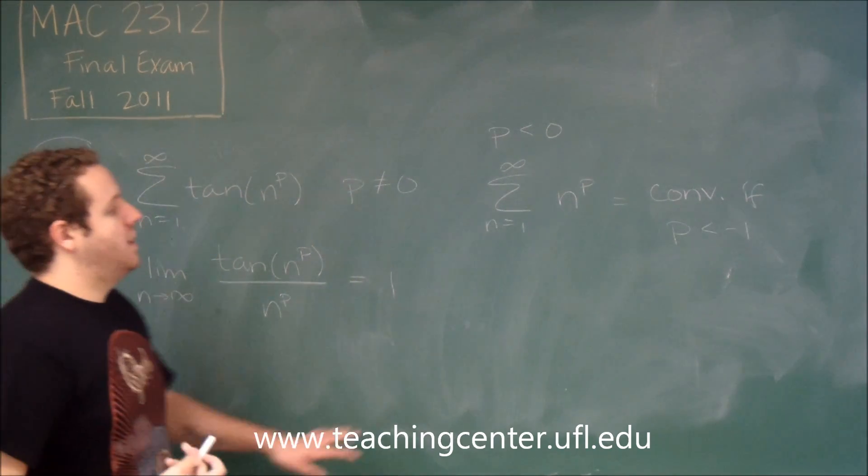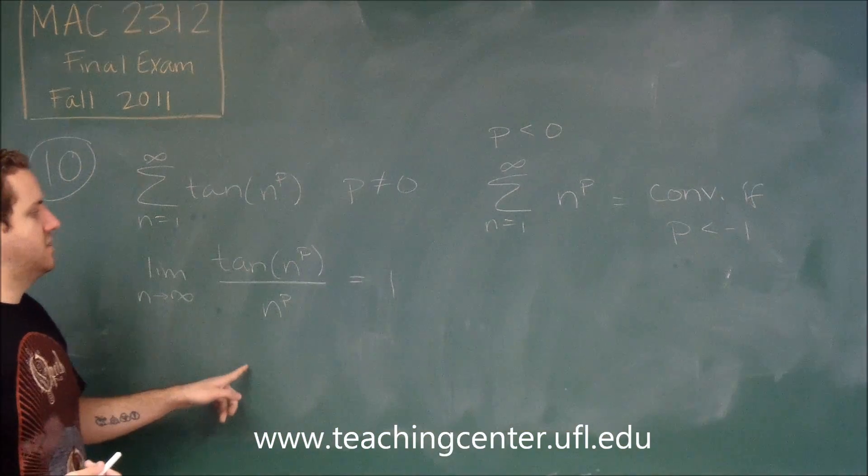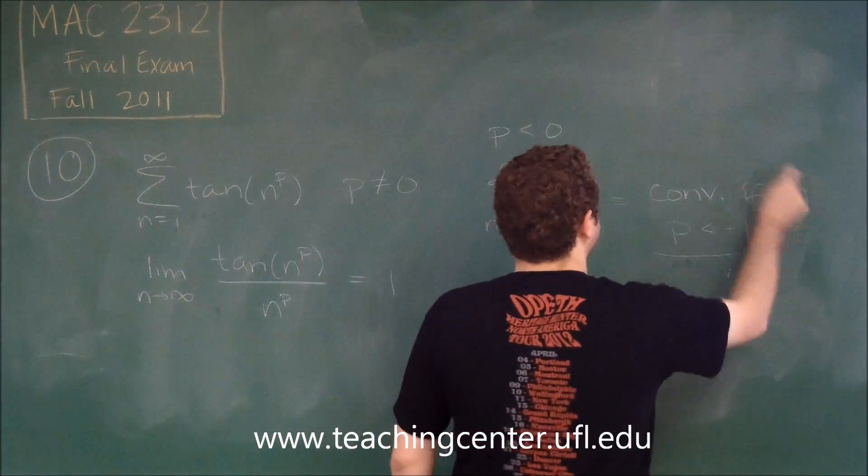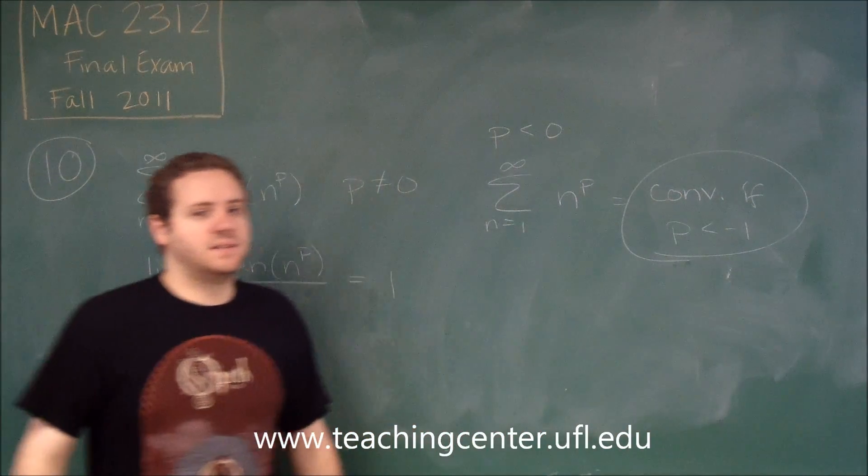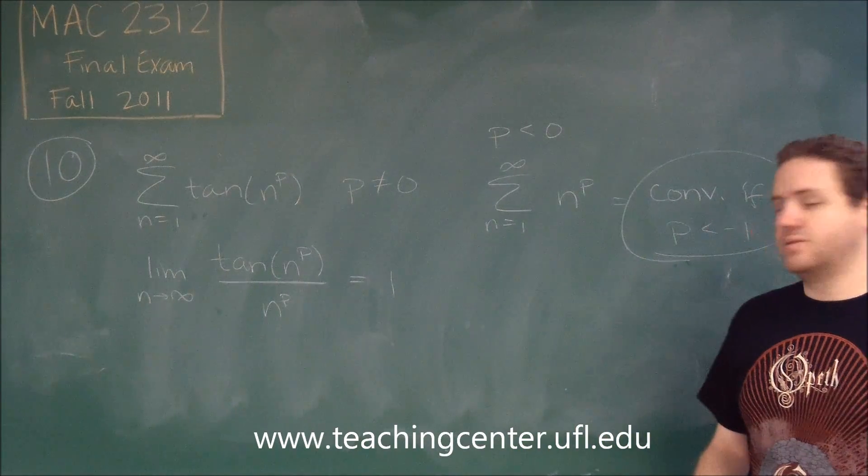Therefore, if this converges if p is less than or equal to negative 1, this converges if p is less than or equal to negative 1 by the limit comparison test. So we get p less than negative 1 for our answer there, which is answer choice D.